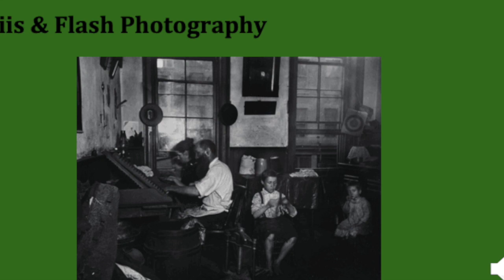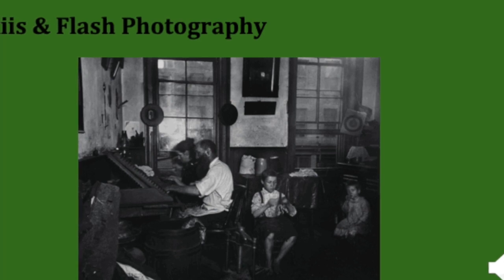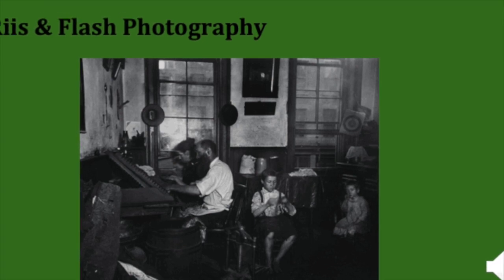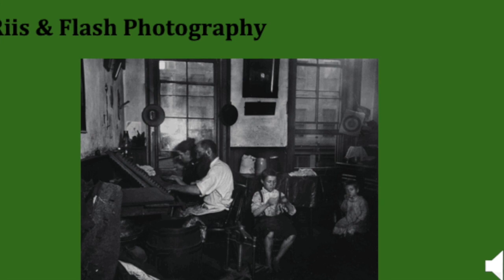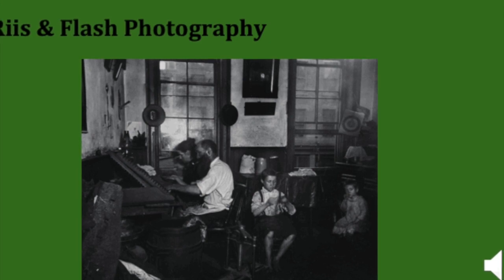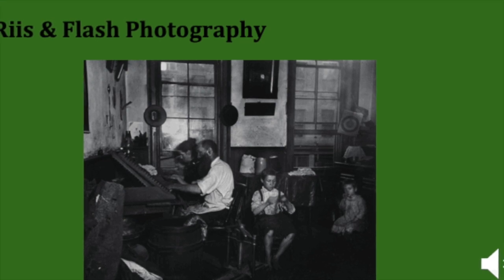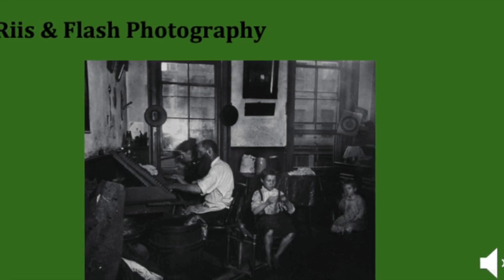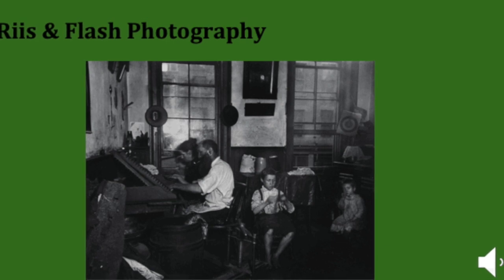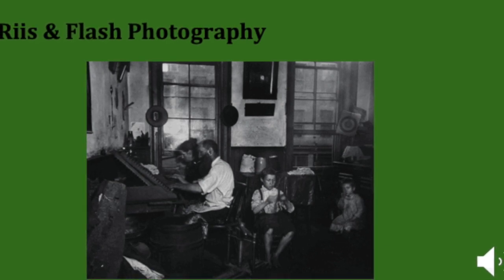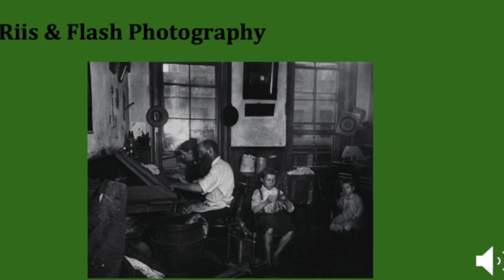In 1887, Rees learned that German inventors had created a new type of flashlight powder, which could be used to photograph dark spaces. The flash powder, a combination of magnesium and potassium chloride, was ignited with a spark, sending a cloud of fire and sparks into the air that would illuminate a space long enough for a photograph to be taken. Rees saw the potential of this innovation for photographing the windowless interiors of the tenements and the dark alleyways that surrounded them.